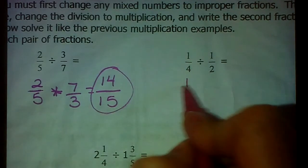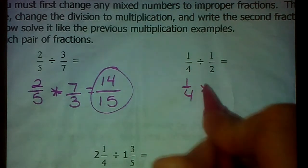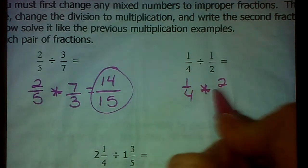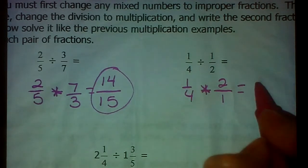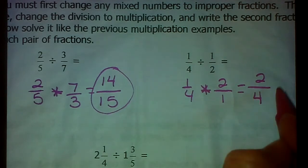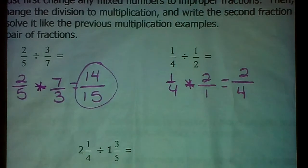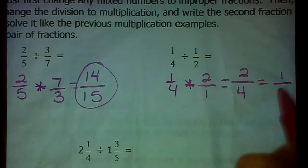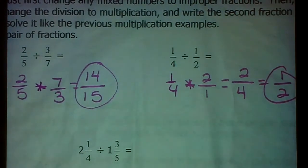Keep the first one, 1 fourth. Switch to multiplication. Flip to the reciprocal. Now go straight across. 1 times 2 is 2. 4 times 1 is 4. This one, I'm sure you know that 2 fourths can be reduced. We're going to divide top and bottom by 2 because that's their GCF. And we get 1 half.